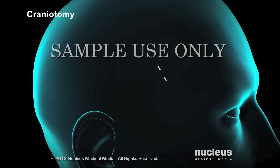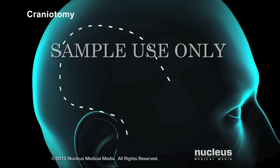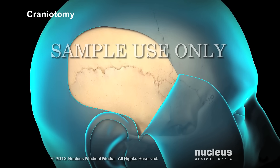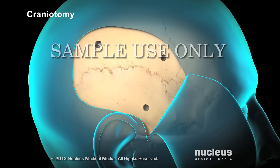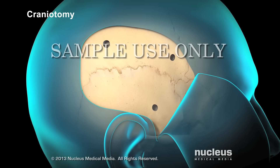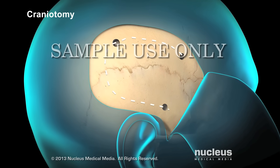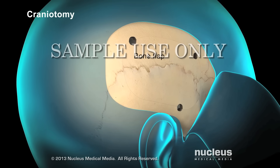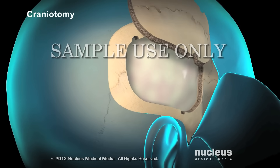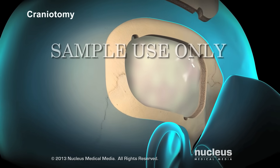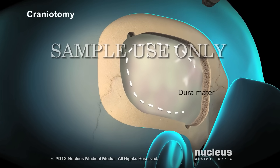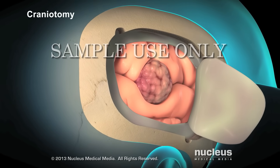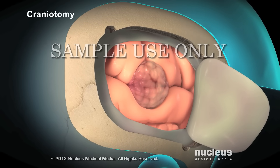To begin, your surgeon will make an incision in your scalp. One or more small holes will be made in your skull. Then your surgeon will connect the holes to create a circular piece of bone called a bone flap and remove it. Your surgeon will make an incision in the dura mater to expose your brain. Then your tumor will be removed.